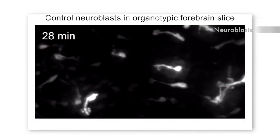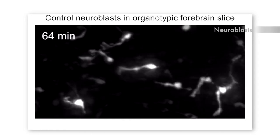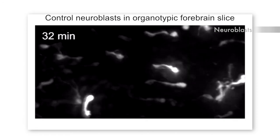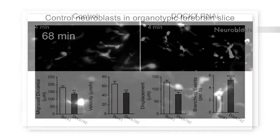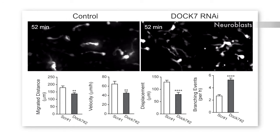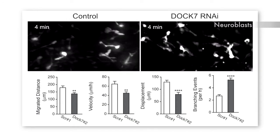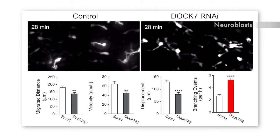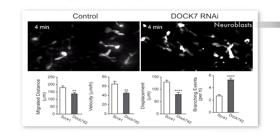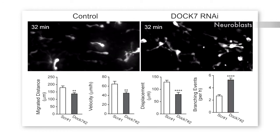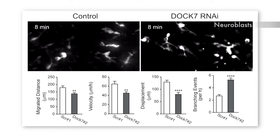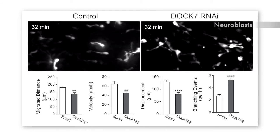Ventricular subventricular zone neuroblasts migrate by undergoing cycles of leading process extension followed by the forward movement of their nucleus and cell body. How these two steps are coordinated is unclear. Neuroblasts lacking DOCK7 often formed aberrant branched leading processes, suggesting that DOCK7 regulates leading process growth and stability. But using a molecular replacement strategy, Nakamuta et al. found that DOCK7 actually controls both steps of the neuroblast migration cycle.